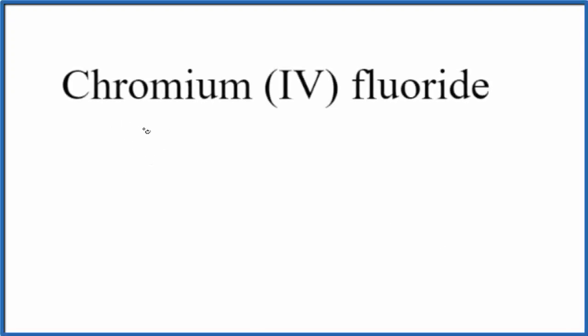In this video we'll look at the formula for chromium 4 fluoride. So first off let's write the element symbol for chromium that's Cr and then fluoride that's fluorine so that's just F.